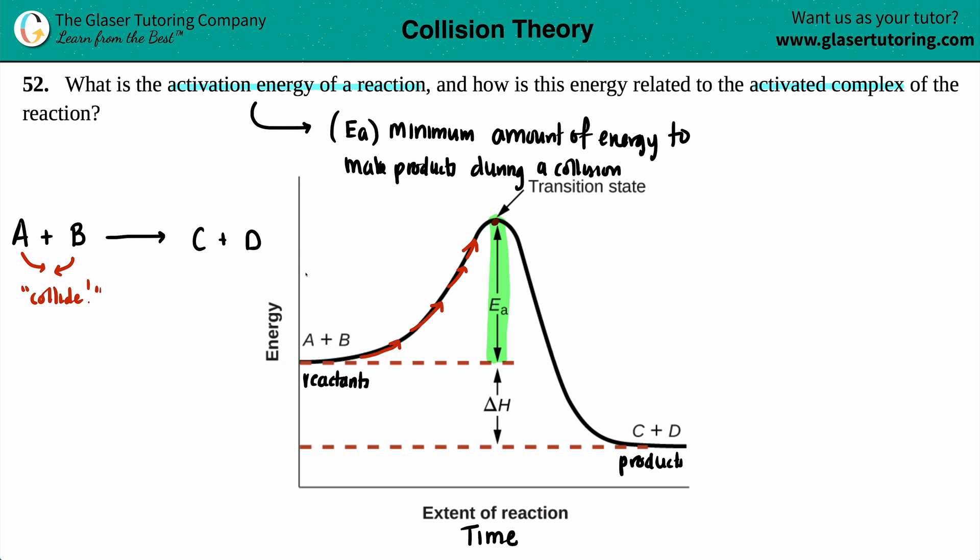Now, of course, you could have big energies, big kinetic energies when these collide, and they'll greatly go over. That's totally fine. The activation energy is always the minimum amount of energy. You could go higher than your activation energy, you could have more energy, but you can't go lower. So that's the activation energy. It's the minimum amount of energy needed to make your products during the collision.